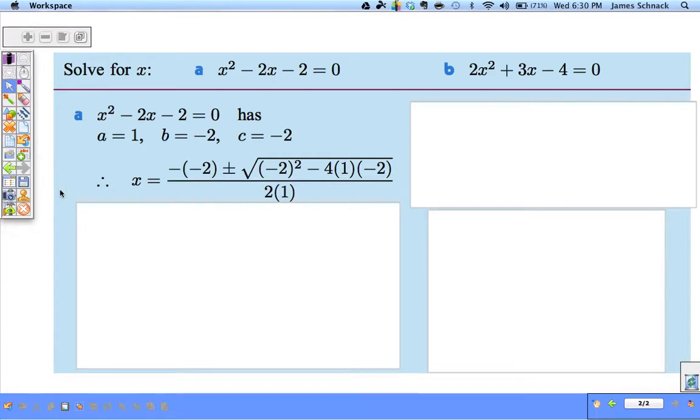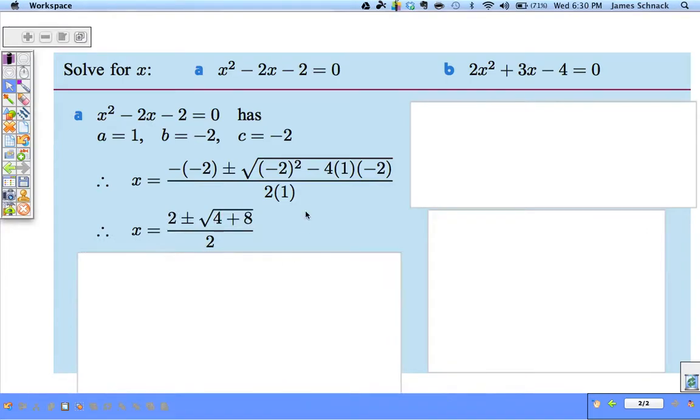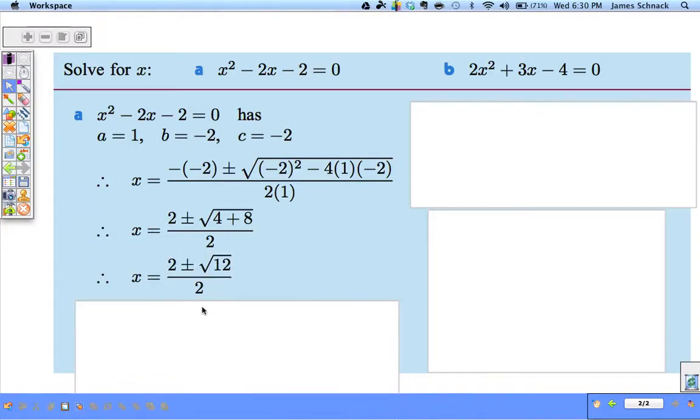Hopefully you filled them in as such. Now it's just a matter of simplifying. Opposite of negative 2 becomes positive 2. Negative 2 squared becomes 4. Negative 4 times 1 times negative 2 is 8. 4 plus 8 is 12. So we have 2 plus or minus the square root of 12 over 2.